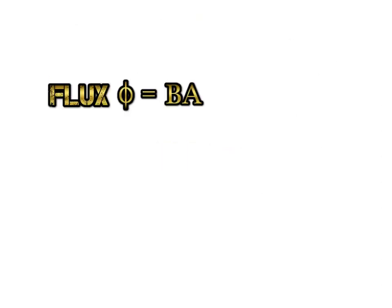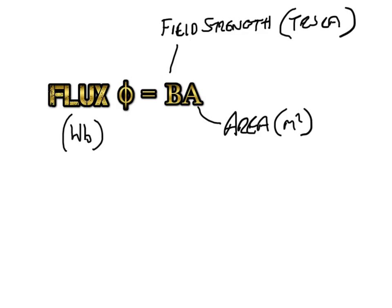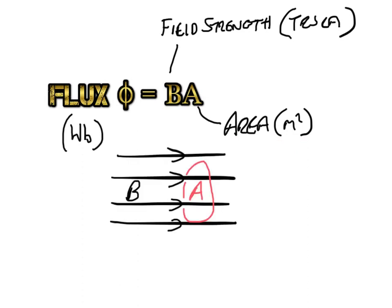So the flux phi, which is measured in Webers, is equal to B times A, where B is the field strength and A is the area it's running through. So for your typical coil, the area we'll be talking about will be the area of the coil itself when the field is running through it at 90 degrees. So for a field running at 90 degrees through the plane of the coil, it's just B times A.